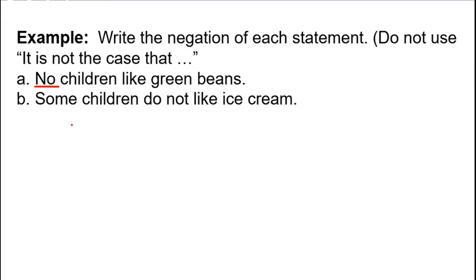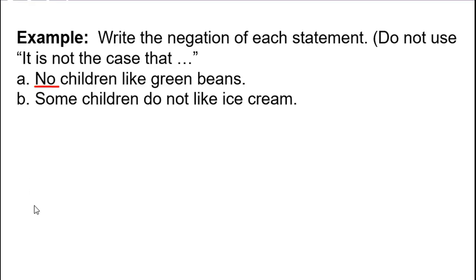No children like green beans. 'No' means none of them — and this statement will be false if there's even one child who actually does like green beans. We don't need every child to like green beans to make it false. Because 'no' is a universal quantifier, we negate it using an existential one: 'there is at least one child who likes green beans,' or 'some children like green beans.'